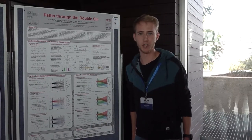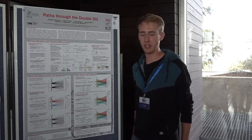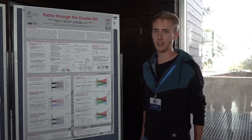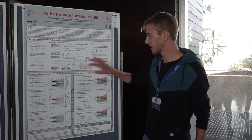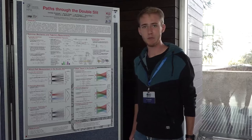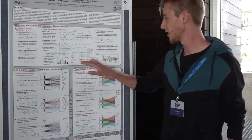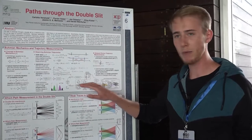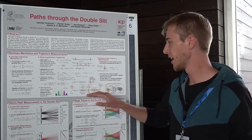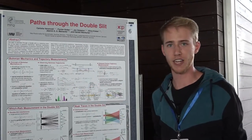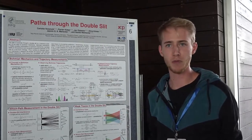My name is Florian Huber. I'm from LMU Munich, and we are experimentalists in the group of Harald Weinfurter. We are currently working on a double-slit setup where one photon is inside the double-slit and the which-path information is entangled to the polarization of a second photon. With this setup, we want to challenge Bohmian mechanics.